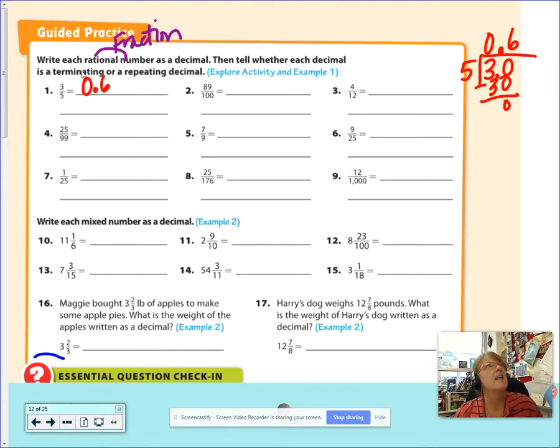This is the same as 6 tenths. 0.6. The second part says, tell me if that's a terminating or repeating decimal. It's stopped. So make sure you say, it's terminating. Kind of like Arnold, yeah.